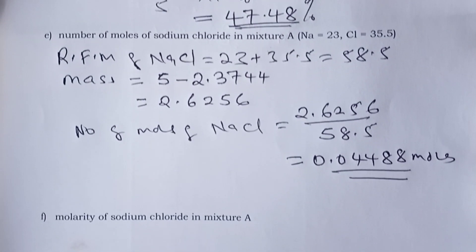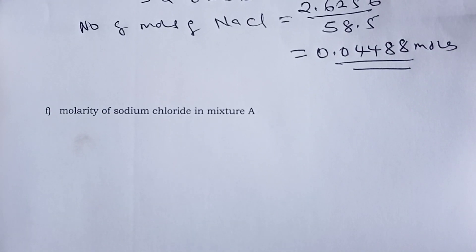Finally, we are asked to find the molarity of sodium chloride in mixture A. And here, I want to repeat that molarity is simply number of moles per liter. So if you remember, we again used 25 cubic centimeter of our mixture A. So these moles were present in 25 cubic centimeter.